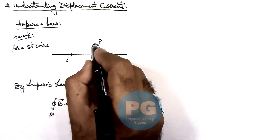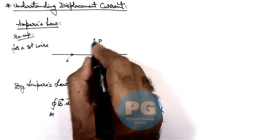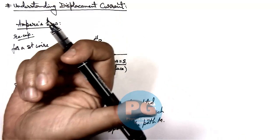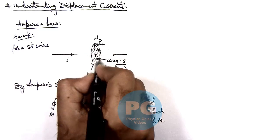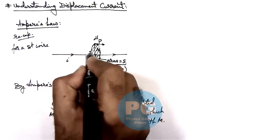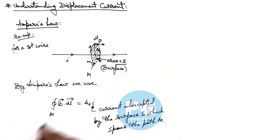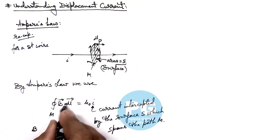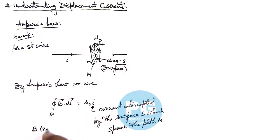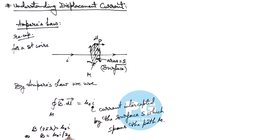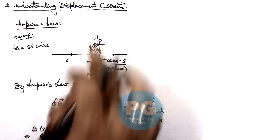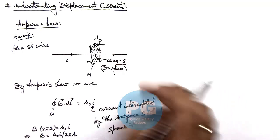For this elemental section of length dL, by the right-hand thumb rule the magnetic induction is tangential. By symmetry, as B is uniform, we can write B multiplied by the integration of dL for the whole path length, which is 2πR, equals mu-naught I. This gives us B = mu-naught I / 2πR. This is the way we calculate the magnetic induction in the surroundings of a wire.